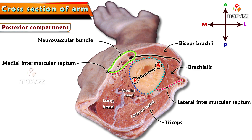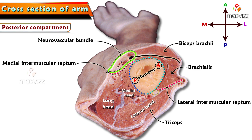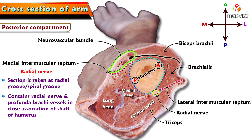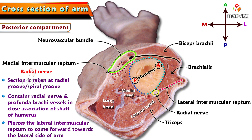In the posterior compartment, near the posterolateral aspect of the shaft, we can see a neurovascular bundle. The nerve here, which is whitish in color and quite closer to the shaft of the humerus, is the radial nerve. This section can be said to be taken at the radial groove or spiral groove, which contains the radial nerve and profunda brachii vessels. The vessels associated with the radial nerve are profunda brachii vessels, in very close association with the shaft of the humerus. The radial nerve is quite close to the lateral intermuscular septum, as it is going to pierce it and come forwards towards the lateral side of the arm.